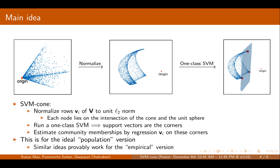This is our algorithm sketch. Our algorithm, SVM-Cone, first normalizes rows of V to unit L2 norm. Then we can see each node lies on the intersection of the cone and the unit sphere, and we can run one-class SVM to find a hyperplane that separates all the points from the region.